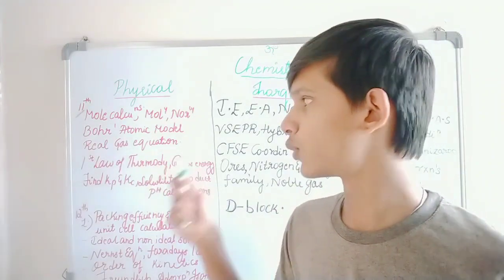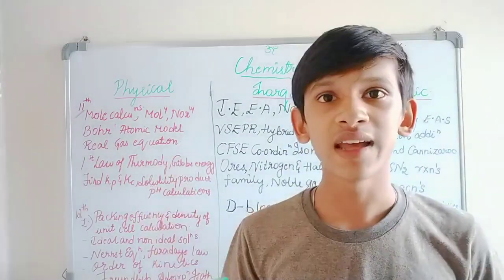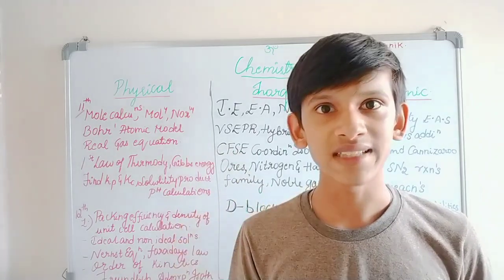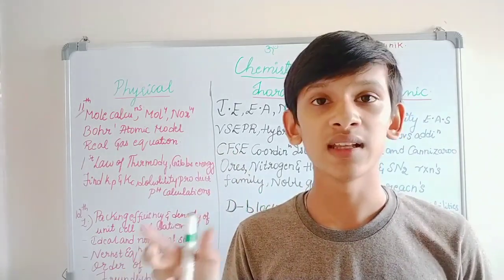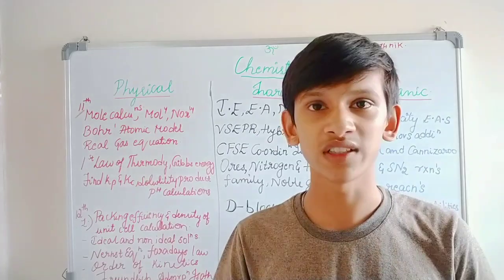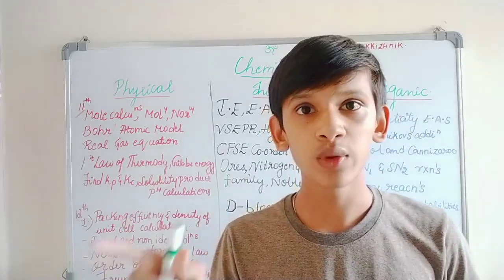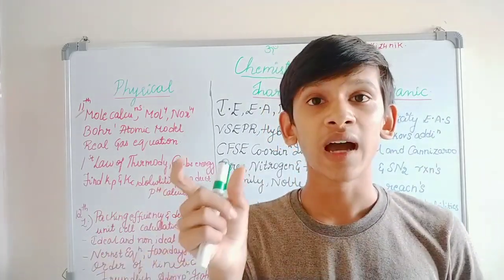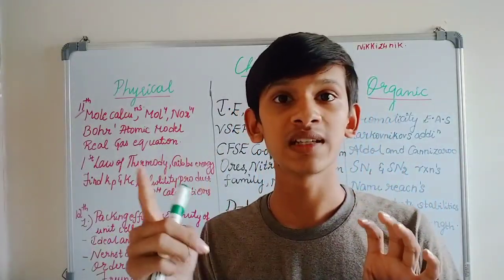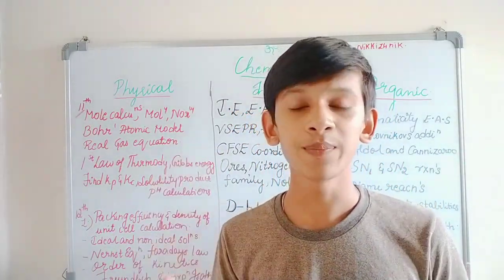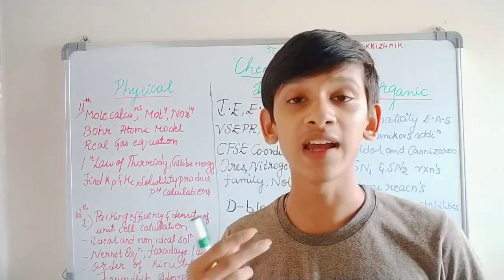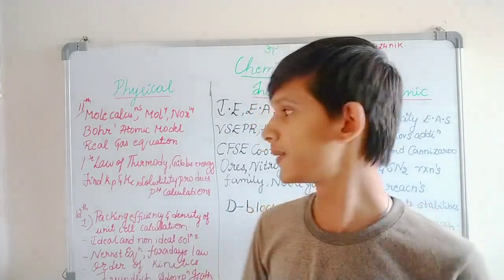Next is the real gas equation: (P + An²/V²)(V − Nb) = nRT. In this real gas equation, you can rearrange the equation and find the correct answer from the four options. Most of the questions in this mock test come from rearranging this equation.